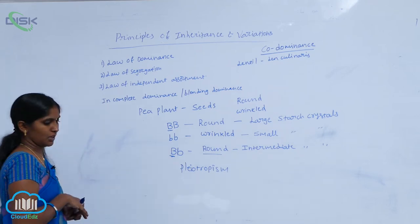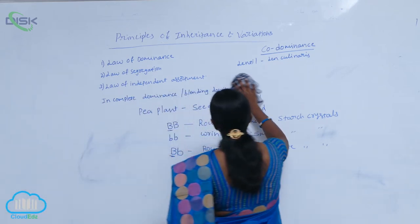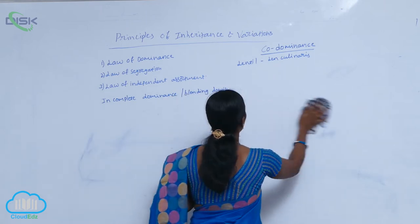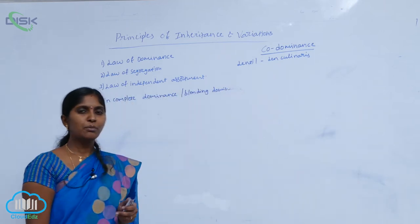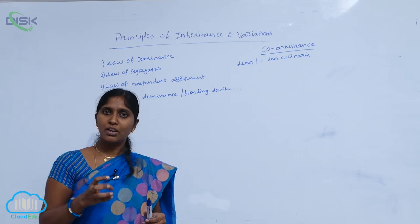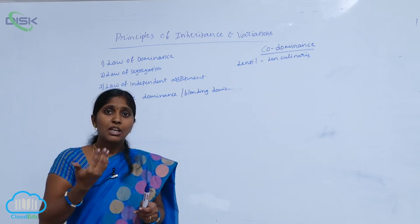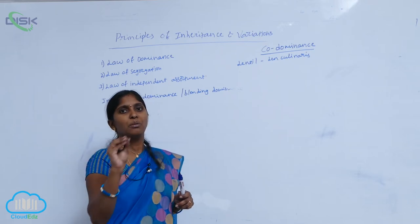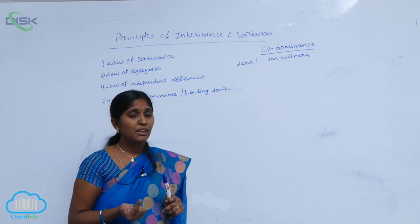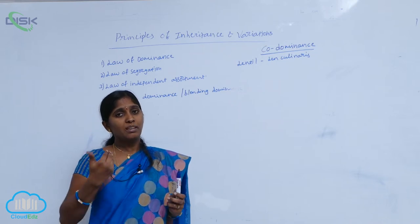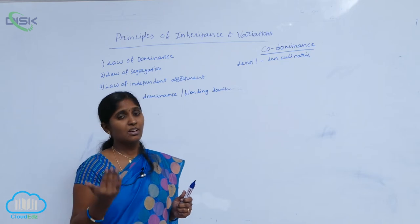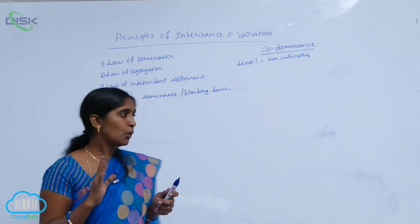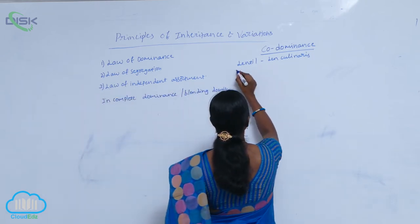So that is incomplete dominance. The law of dominance also varies with co-dominance. In co-dominance, the F1 progeny does not show one of the parental characters, but it shows both parental characters fully. In incomplete dominance, blending characters of the parents appear, but in co-dominance both parental characters appear fully. The best example is lentil.